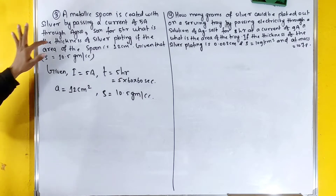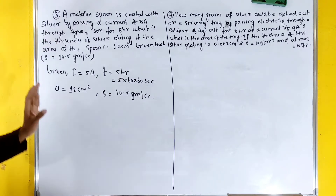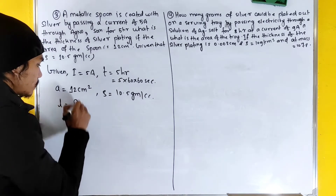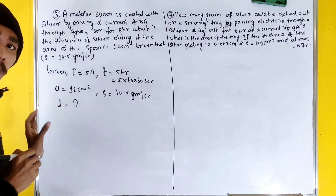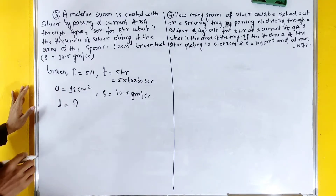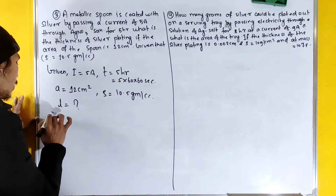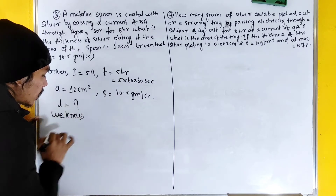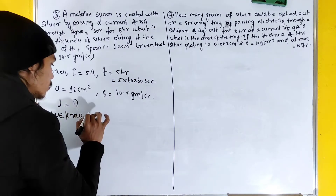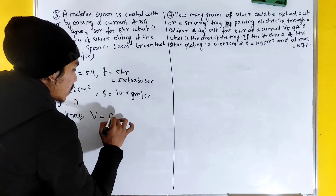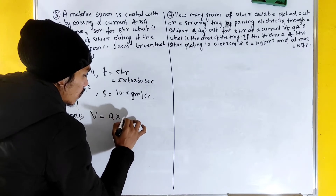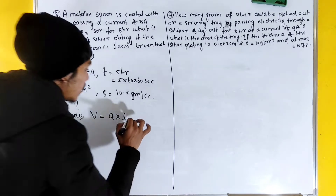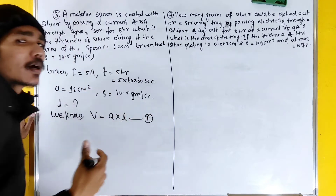We need to find the thickness, that means length L is equals to what. We know that volume is equal to area into length — this is equation 1.